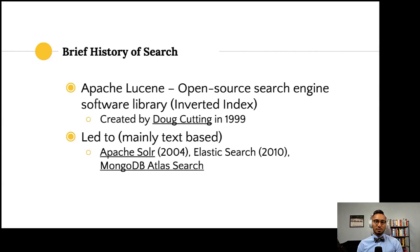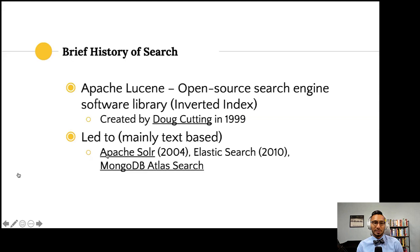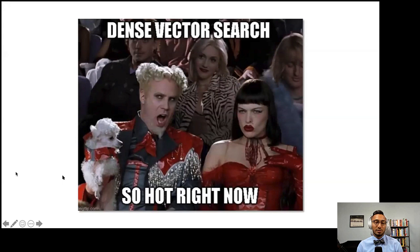A quick history of search: Apache Lucene, one of the core inverted indexes, came from Doug Cutting in 1999, leading to Apache Solr and Elasticsearch. Solr does really well at scale, but that's still lexical-based searching — matching text with edit distance, word overlap, or TF-IDF. Now, dense vector search is becoming very popular, with more data scientists working in search and recommendations, working beyond the world of text.